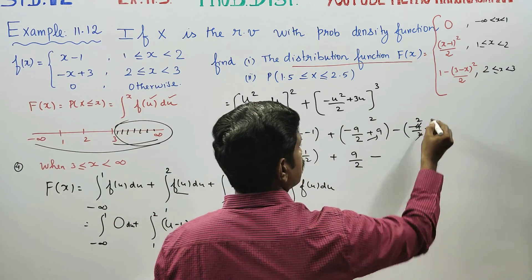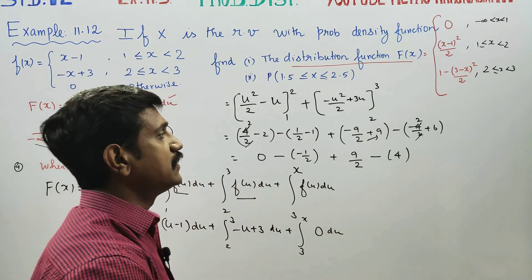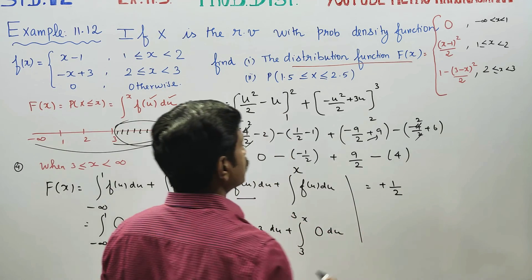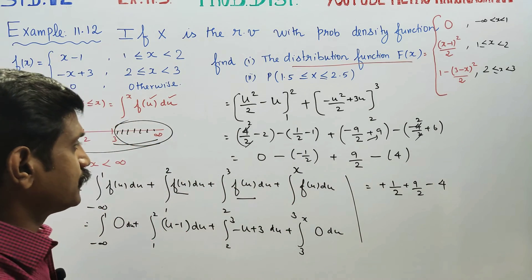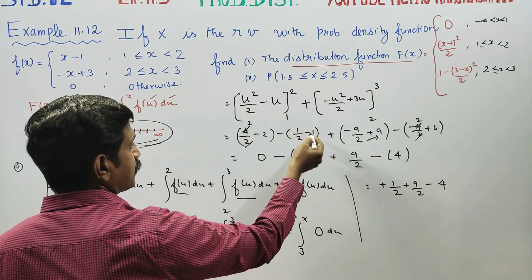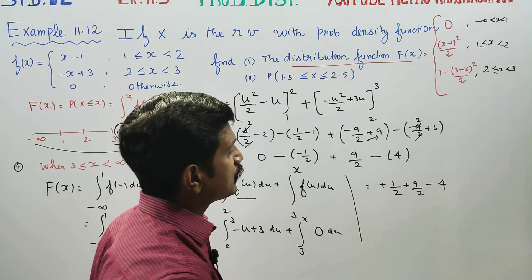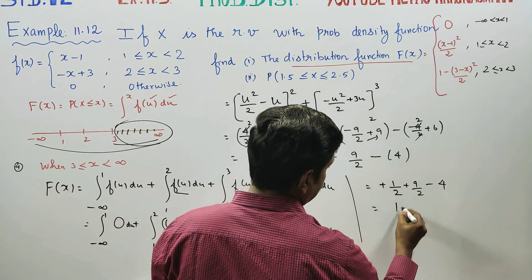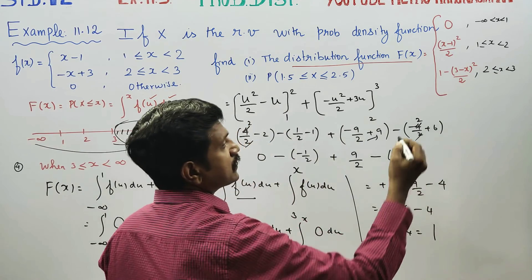Combining all parts: plus 1 by 2 plus 9 by 2 minus 4. LCM gives 10 by 2 minus 4, which is 5 minus 4. The answer is 1. For x greater than or equal to 3, F of X equals 1. This is the last answer.